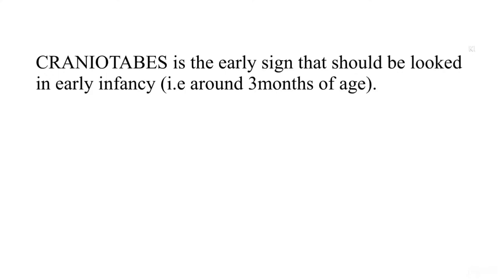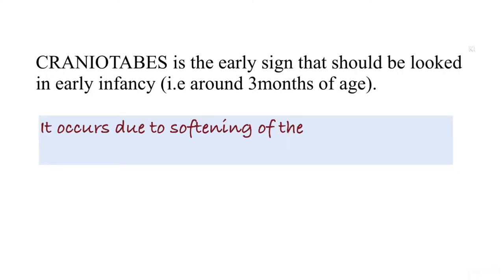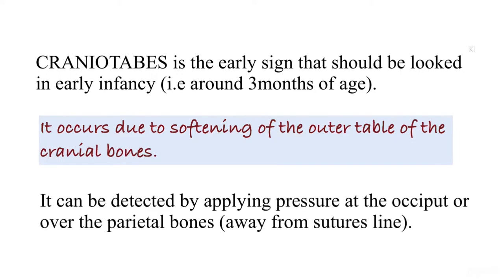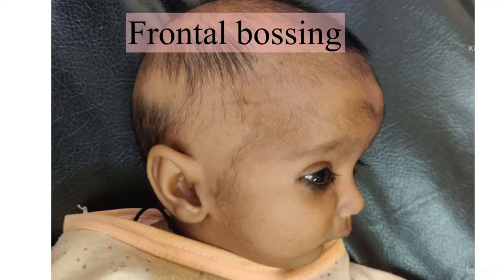Craniotabes is the early sign that should be looked for in early infancy, that is around 3 months of age. It occurs due to softening of the outer table of the cranial bones, and it can be detected by applying pressure at the occiput or over the parietal bones away from the suture lines.